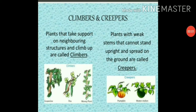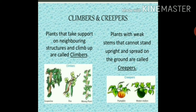Creepers are generally small plants that grow close to the ground. Some plants with weak stems cannot stand upright and spread along the ground — these are called creepers. Examples include pumpkin and watermelon. Creepers are weak plants whose stems spread on the ground rather than growing upright.